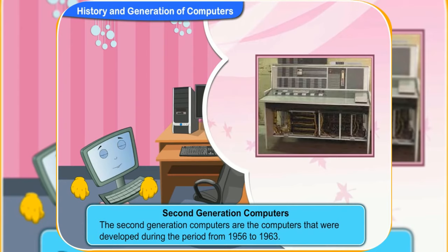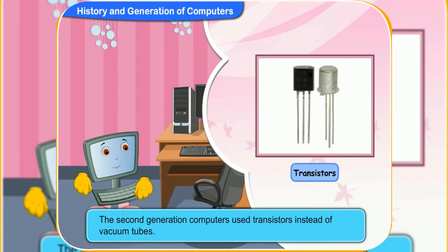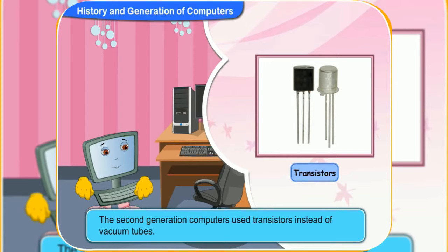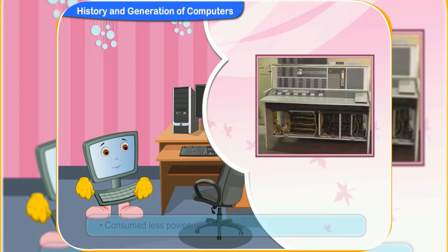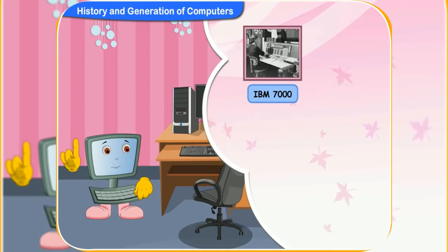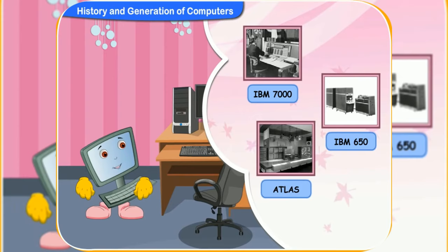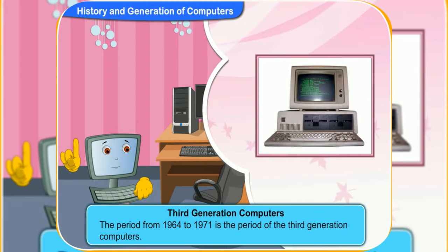Second-generation computers were developed during the period from 1956 to 1963. These computers used transistors instead of vacuum tubes. As transistors are smaller than vacuum tubes, the computers became much smaller, faster, and cheaper. They consumed lesser power than first-generation computers, and programming could be done on them. These computers were mainly used in the atomic energy industry. IBM 7000, IBM 650, and ATLAS are some examples. Second-generation computers used both machine language and assembly language.